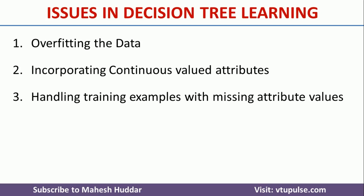That is, let us say that a particular attribute is not having a value for the fifth example. What we need to do is find some value, or we need to fill that particular fifth example with a proper value, and then we can use decision tree learning.